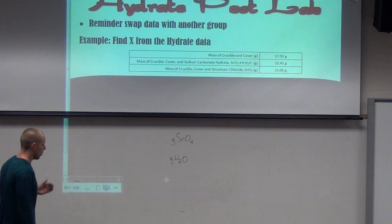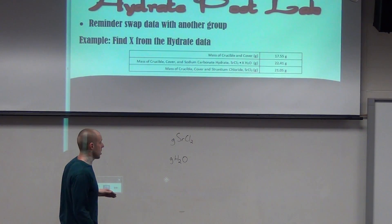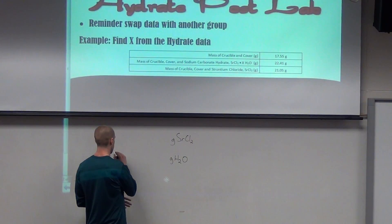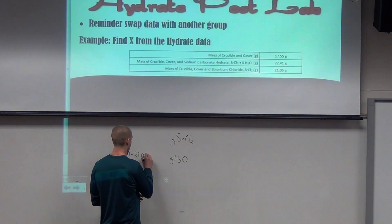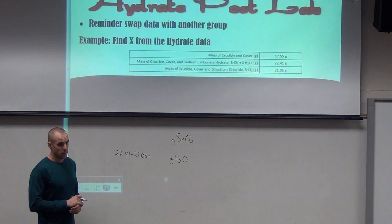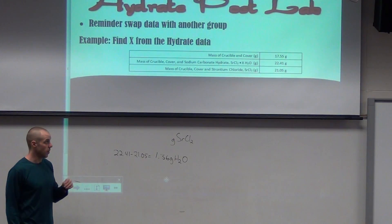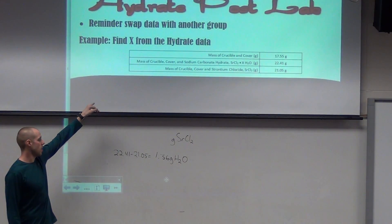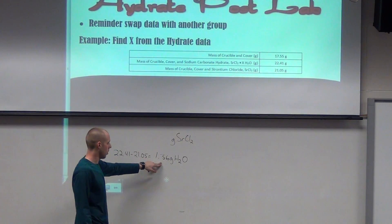We know how to find grams of water — we take the mass of the crucible and everything with the hydrate minus the mass of the crucible and everything without the water in it anymore. So we take 22.41 minus 21.05. You can work along with me to see if you're doing these right — it's a good gauge of where you're at for Friday. So we take this and we get 1.36 grams of water. That's our mass of the crucible and cover with the hydrate, minus the mass of it without the water.